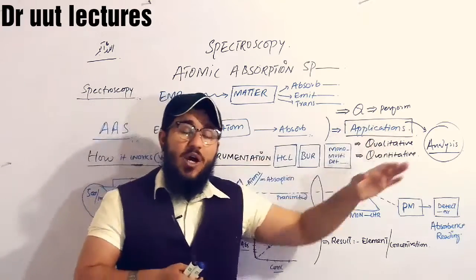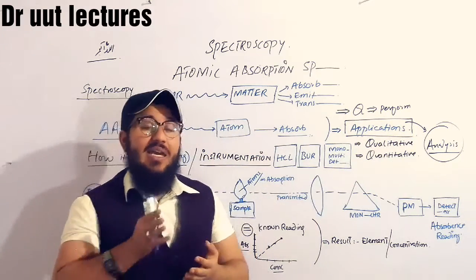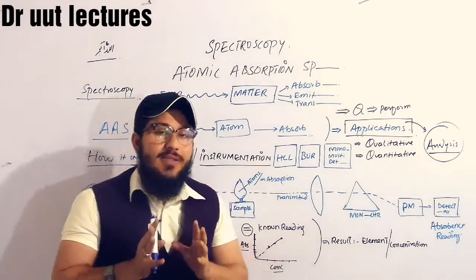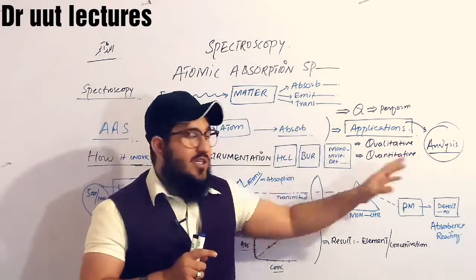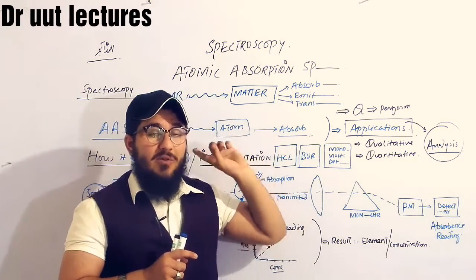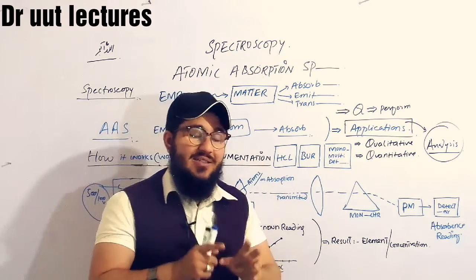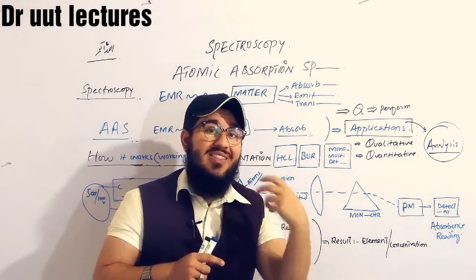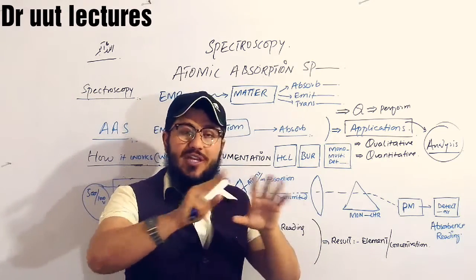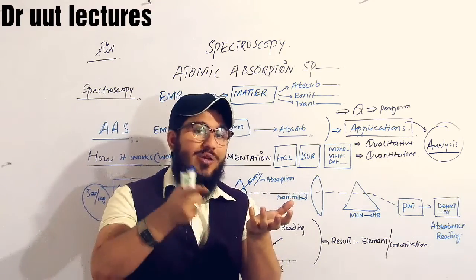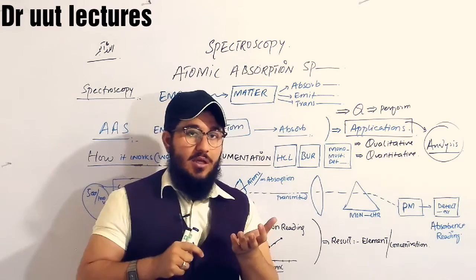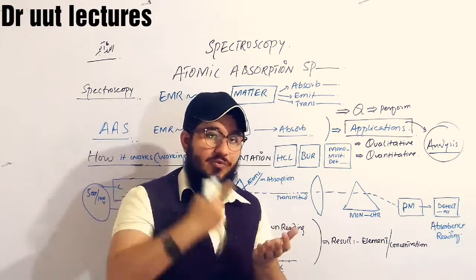Why do we perform AAS — Atomic Absorption Spectroscopy? The answer is that we perform it for the sake of analysis. By means of this spectroscopy we can do the analysis of a specific sample, specific analyte. When you take any sample, we want to analyze what is present in it — what kind of elements are present and what is the concentration of those elements.